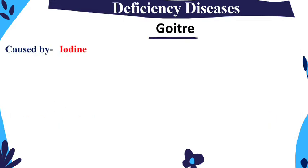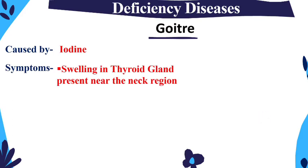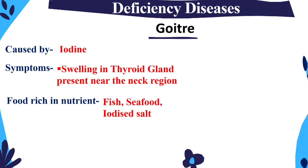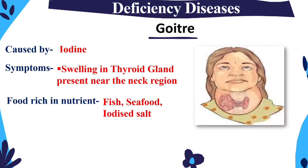Next is Goiter, caused by iodine deficiency. When our body lacks iodine, we get goiter — which causes swelling in the thyroid gland present near the neck region. You can see in the image that the person has a large swelling near the neck. To prevent it, consume fish, seafood, and iodized salt.